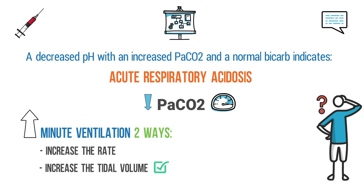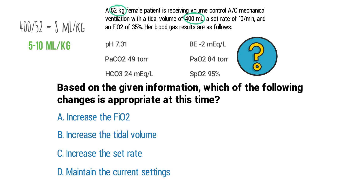Since the tidal volume is set appropriately, there is only one possible way to increase minute ventilation. We can be certain that in order to lower the PaCO2, we need to increase the rate. By taking what the question gives us and breaking it down step by step, the correct answer has to be C: increase the set rate.